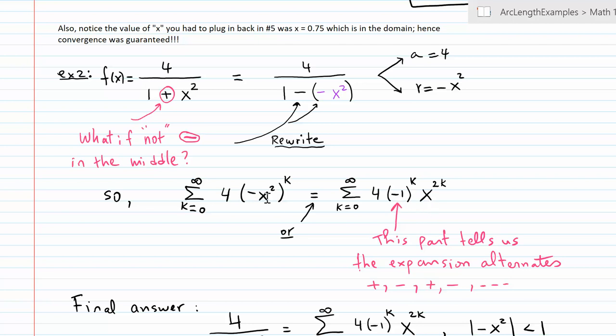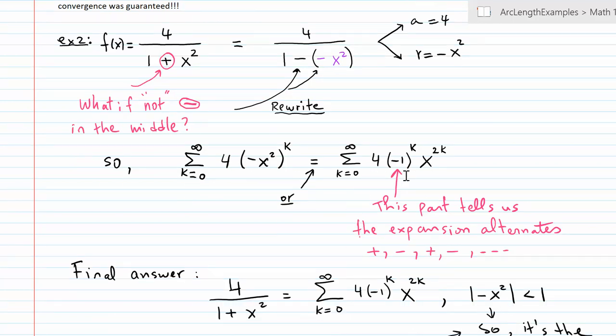Now here I'm kind of separating the negative 1, which needs to be raised to the power of k, and x to the 2k. I'm separating that to show that when you actually expand this, what negative 1 to the power of k does is that it makes the signs alternate: plus negative, plus negative, and so on and so forth.